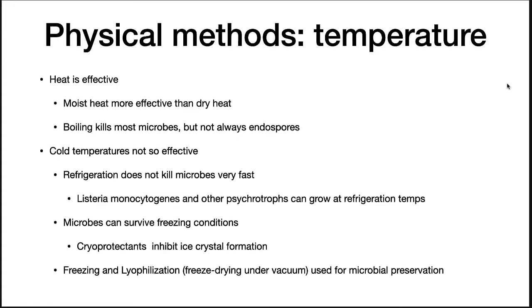There are numerous physical methods for controlling microbial growth. One of the oldest and most effective is temperature. Moist heat, i.e. steam, is more effective than dry heat. Boiling kills most microbes, but not endospores. Cold temperatures can preserve food and stop growth, but refrigeration does not kill microbes. Psychrophiles, such as Listeria monocytogenes, are able to grow at these temperatures and can cause disease if they reach high enough populations. Microbes can survive freezing. Freezing and lyophilization, which is freeze-drying under a vacuum, are actually used for microbial preservation. It is necessary to add cryoprotectants in these cases to inhibit ice crystal formation, which will kill cells.